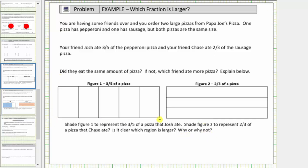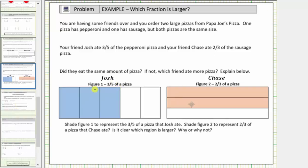So notice how the rectangle represents the pizza. For three-fifths of the pizza, we shade three of the five equal-sized pieces, and for two-thirds of a pizza, we shade two of the three equally-sized pieces. Here's a model for three-fifths, the amount of pizza Josh ate, and here's the model for two-thirds, the amount of pizza that Chase ate.